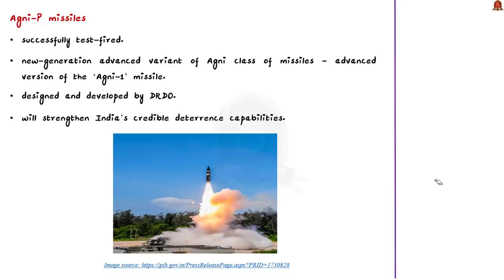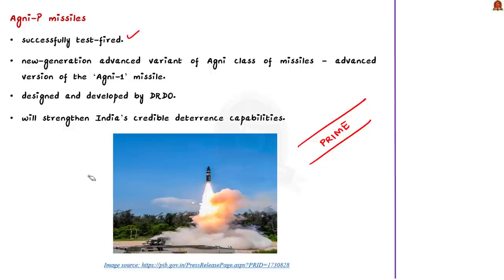Now let us see the important missile in the news — Agni P missile. P stands for Prime. According to the news, this missile was successfully test fired from Dr. A.P.J. Abdul Kalam Island off the coast of Odisha. In this test fire, the missile met all mission objectives with high level of accuracy. It was a successful test.